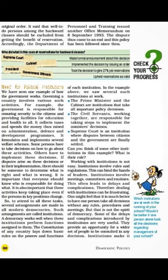Now page 60 — we have to discuss the need for political institutions. We have seen one example of how the government works. Governing a country involves various activities; for example, the government is responsible for providing security to citizens, facilities for education, and health facilities for all.